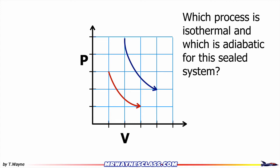Which process is isothermal and which is adiabatic for this sealed system? Here I have two curves, one is isothermal and one is adiabatic. An isothermal curve is one where the temperature is the same everywhere along the curve. So I'm going to use that fact to check the endpoints to determine which one of these is isothermal.